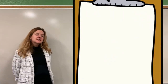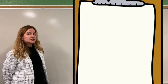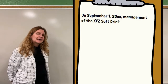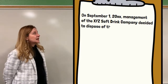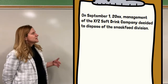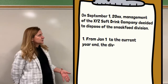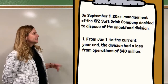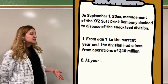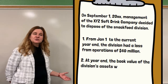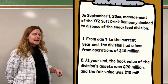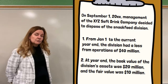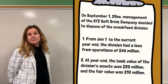Now we look at another example: the discontinued operation is held for sale. The division is not yet sold at period end, but management plans to sell it. Management decided on September 1st to sell the snack food division, but it hasn't been sold as of year-end December 31st. We look at operating income from January 1st to year-end — they have a loss of $40 million. At year-end, we compare the book value of the division ($20 million) to the fair value of what we could sell it for ($10 million).